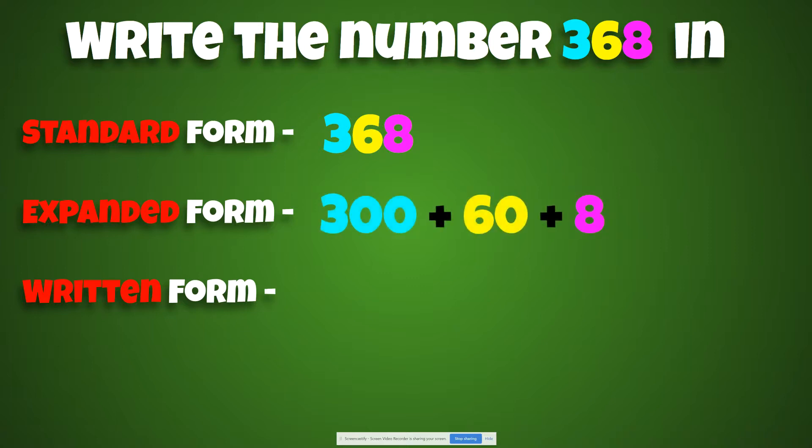Expanded form. Remember, we explode the number to see each digit. It's 300 plus 60 plus 8. Oh, you guys are doing fantastic. And written form is the number in words. So it's 368. All right, guys. Get ready. Erase your boards. Let's go on to the next one.